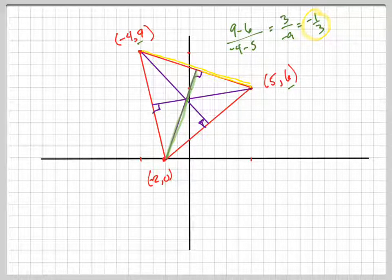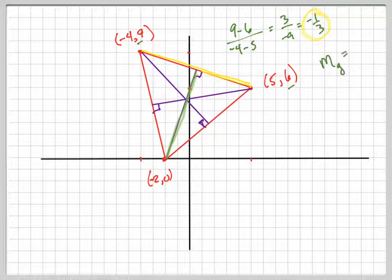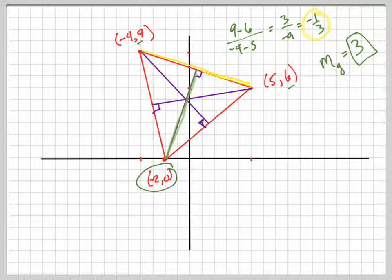That's the slope of my yellow line. Oh wait, isn't it the opposite reciprocal? Uh-huh, so the slope of the green line, slope of the green line, I'll say m sub g, slope of the green line is going to be positive 3. Well, if that's the slope of that line, and this is the point on that line, what can I use to find the equation of that line?